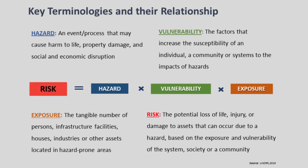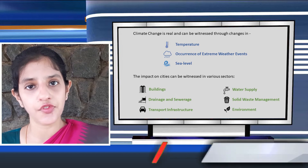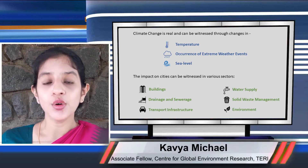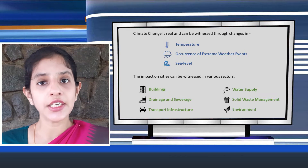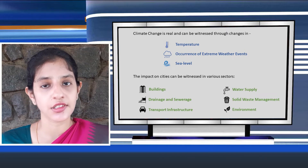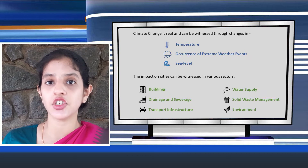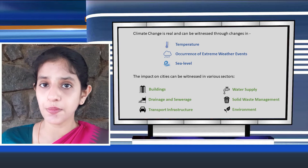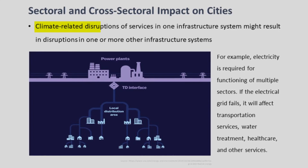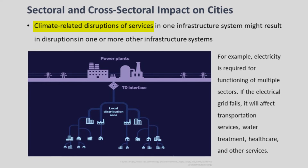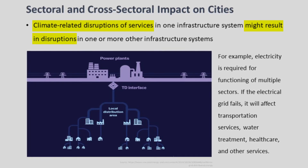The risk of climate-related impacts in cities results from the interaction of climate-related hazards with the vulnerability and exposure of human and natural systems. Cities face grave risks from sea level rise, urban flooding, water stress, loss of biodiversity and other climate change impacts. Climatic events also affect critical infrastructure in cities like roads, railways, water supply lines and electricity supply. In urban settings, climate-related disruptions of services in one infrastructure will almost always result in disruptions in one or more other infrastructure systems.